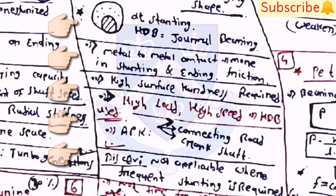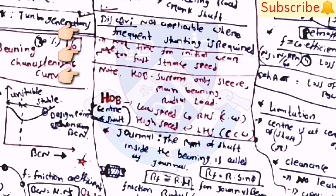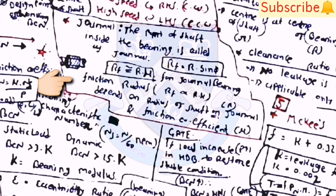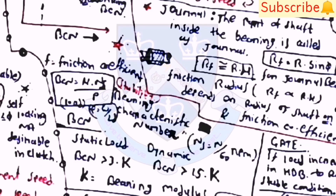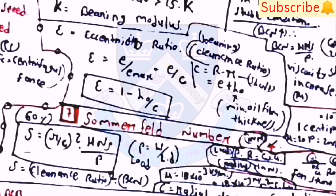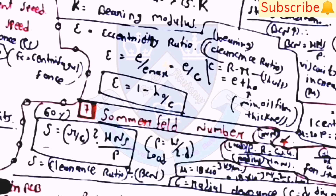HDB is not applicable where frequent starting is required. For journal bearing: r_f ≈ R·mu, and r_f = R·sin(alpha). Bearing Characteristics Number (BCN) = mu·N_s/p — a very important equation. For static load: BCN > (1/k)·K; for dynamic load: BCN > 15·K, where K = bearing modulus. Eccentricity ratio: epsilon = e/e_max = e/c, and epsilon = 1 − h_0/c. Radial clearance: c = R − r = e + h_0, where h_0 = minimum oil film thickness, R = bearing radius, r = shaft radius.